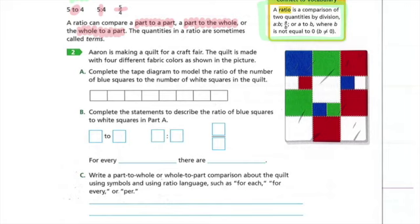All right, so let's look at this next example. It says, Aaron is making a quilt for a craft fair. The quilt is made with four different fabric colors as shown in the picture. Complete the tape diagram to model the ratio of the number of blue squares to the number of white squares. How many blue squares do we have? We have three, so let's color in three blue squares. How many white squares? One, two, three, four, five. And there's five white left. So there's our tape diagram. Three blue to five white.